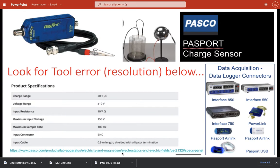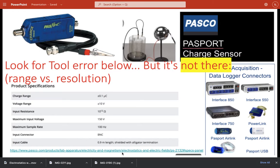The very first thing you do, this slide deck is prepared exactly for this, is to let you know what the specs are when you need them, and you look for tool error, you look for resolution below. The problem is, in this particular case, it's not there. You can see the range here, but no resolution, so what do you do?